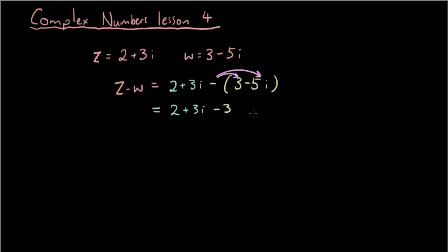Okay, so all this ends up with simplifying the like terms: 2 minus 3 is negative 1, and 3 plus 5 is 8i.